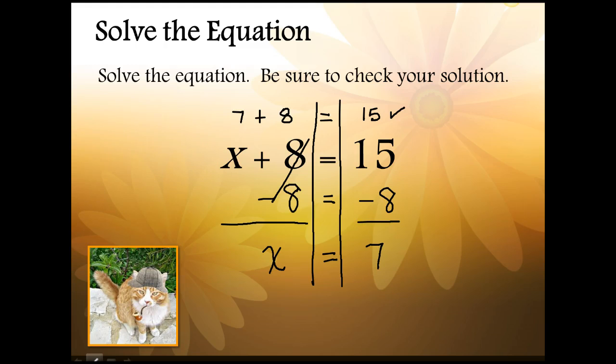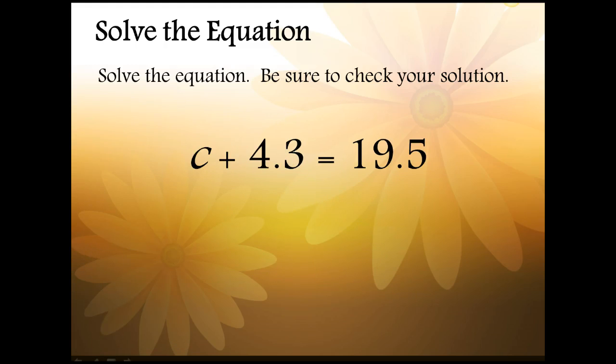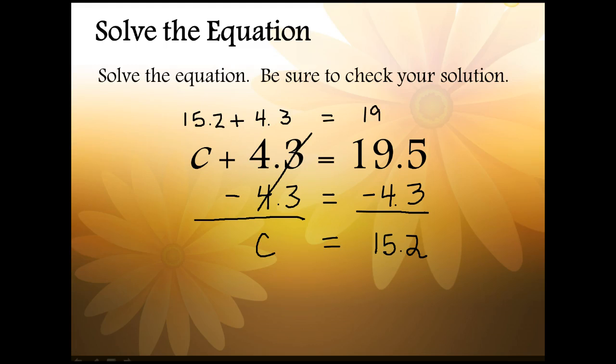Let's try another example. Let's find the solution to c plus 4.3 equals 19.5. First we find the variable then we will isolate the variable by subtracting 4.3 from both sides. Remember when we add or subtract decimals we need to line up the decimals. Plus 4.3 and minus 4.3 equals 0 leaving us with just c and we have c equals 15.2. Then we need to go back and make sure our solution is correct. So we will add 15.2 plus 4.3 and we get 19.5 so c equals 15.2 is correct.